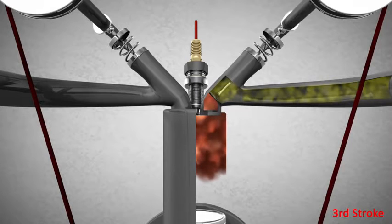The third stroke has been named power stroke because this is the process where power is produced. The air-fuel mixture explodes. The force created by the explosion causes the piston to move down.